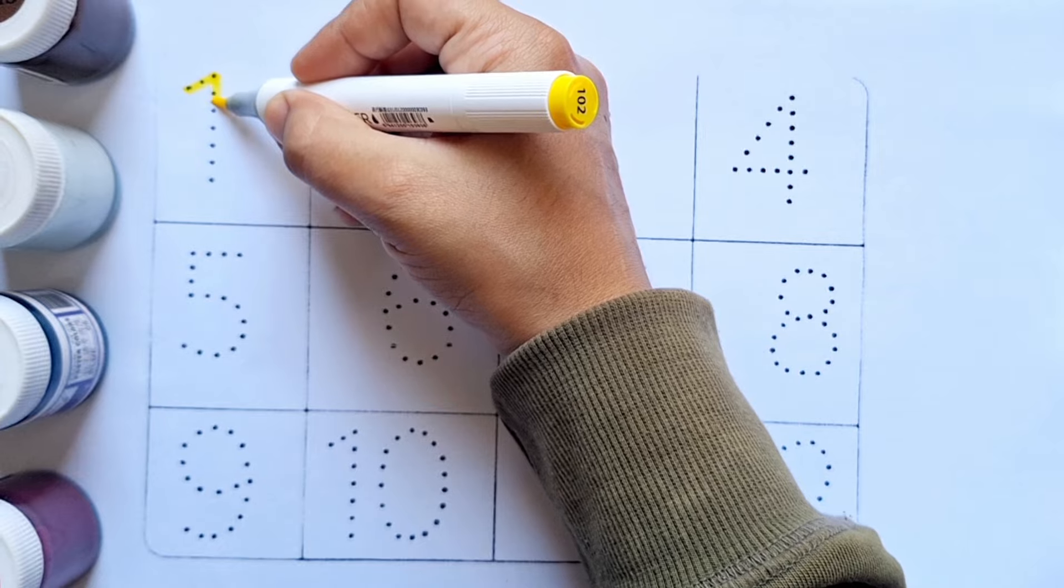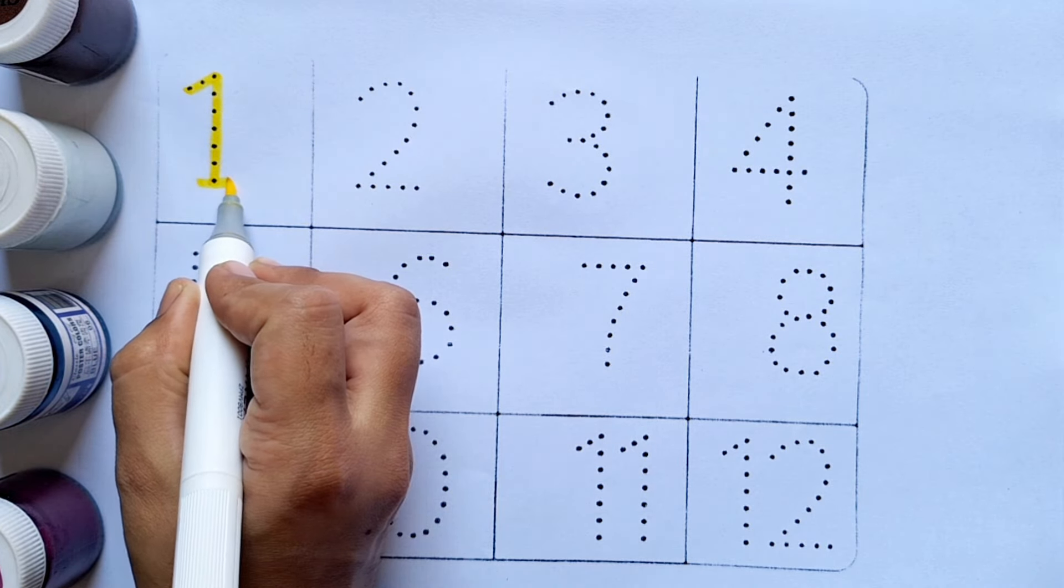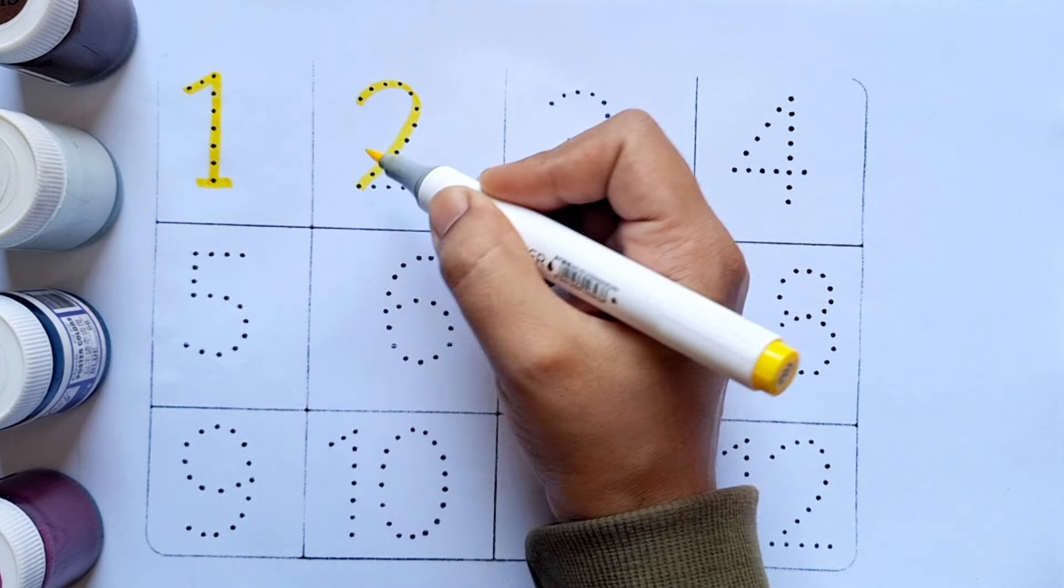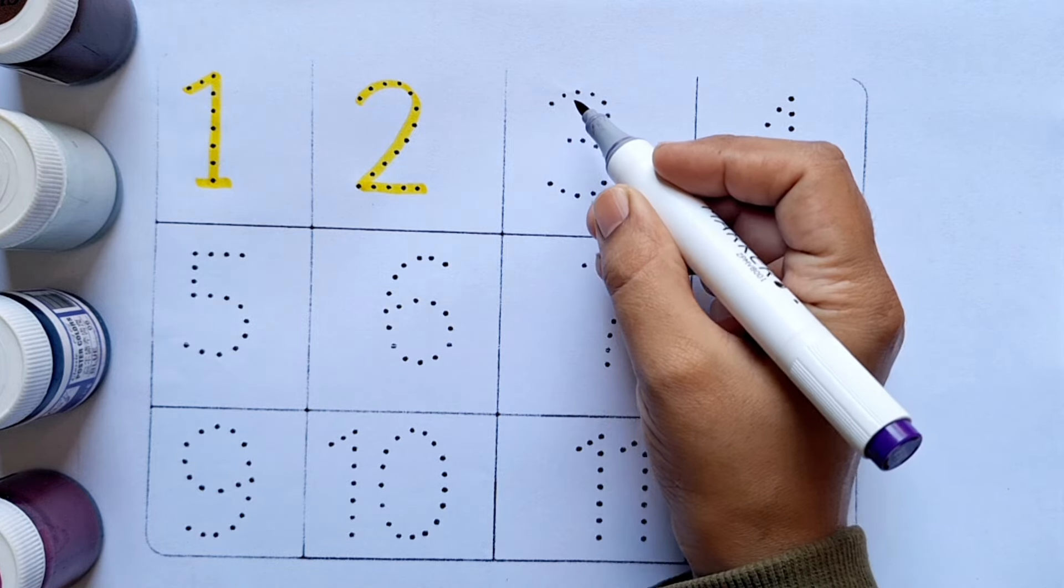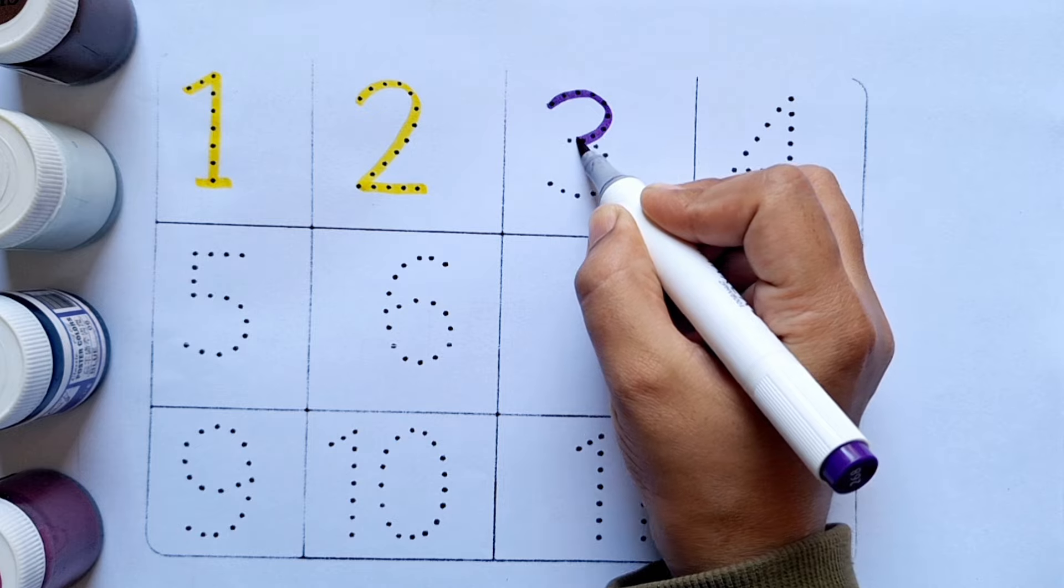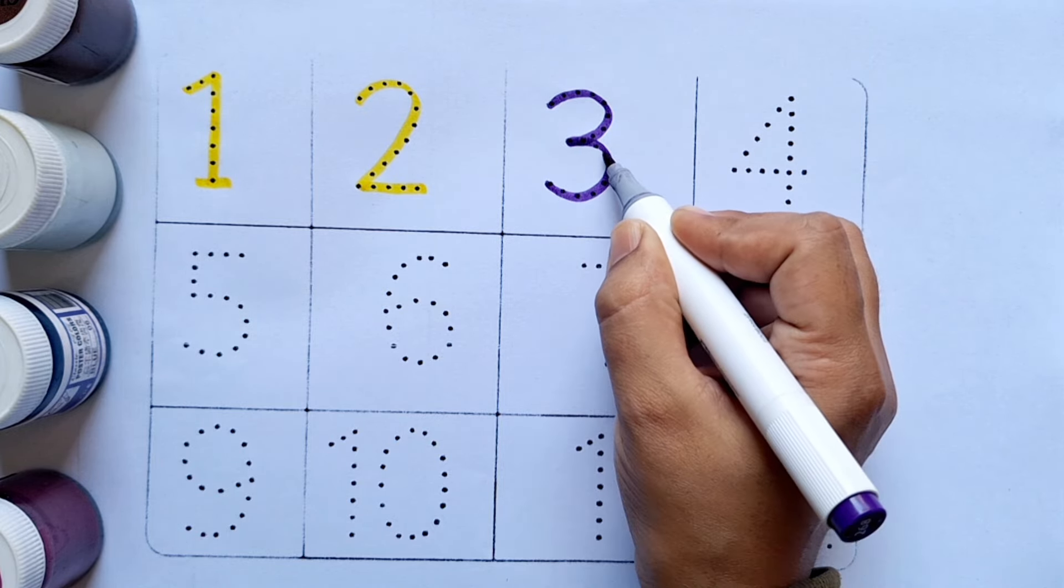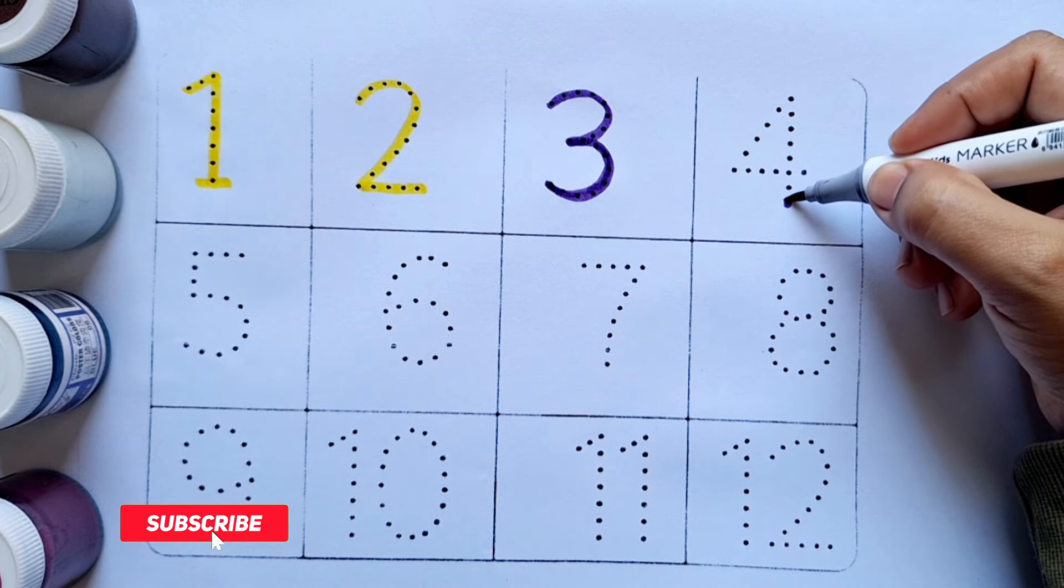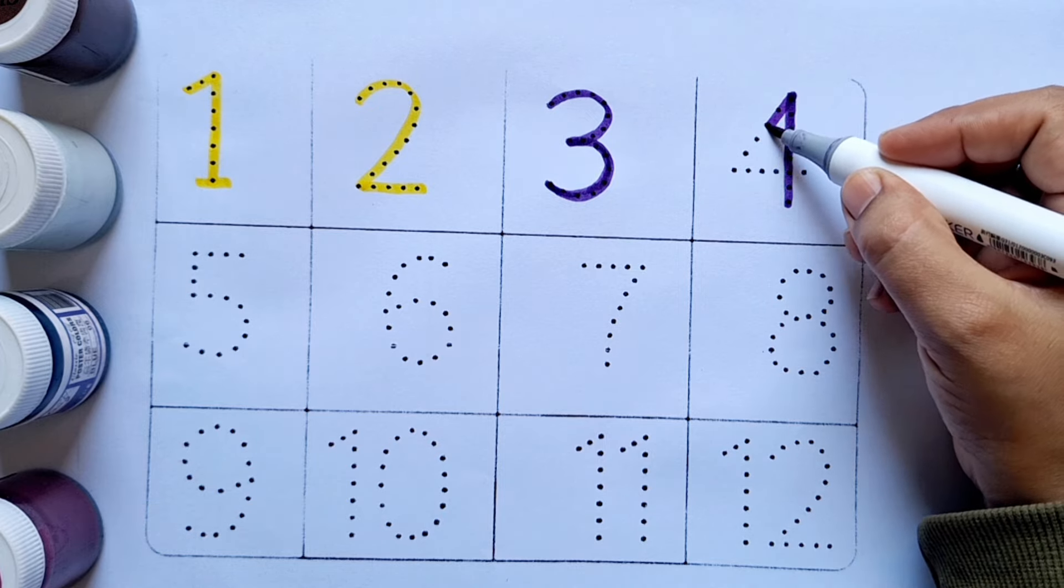One. This is one. Two. This is two. After one comes two. Three. This is three. After two comes three. Four. This is four. After three comes four.